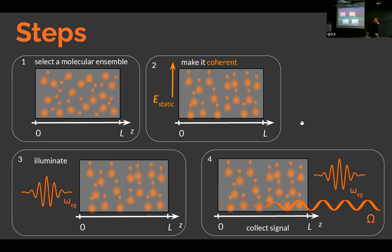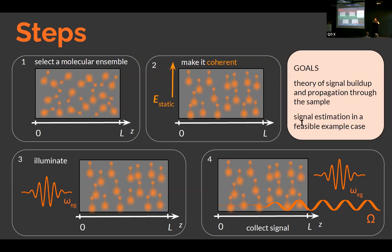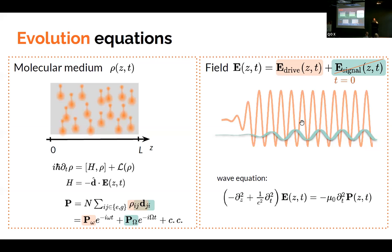So the steps are very easy. We take an ensemble of molecules. This is a macroscopic ensemble of the order of tens of centimeters. You make it coherent. That is, you co-orient the molecules, for instance, with the static electric field. They have permanent dipoles, so that should be possible. Then you illuminate it and collect the signal. And we want to make a theory that will describe it and estimate the signal using that theory in a feasible case.